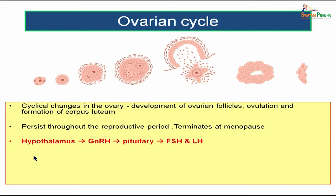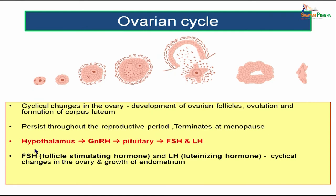The ovarian cycle is under hormonal control. The hypothalamus secretes GnRH (gonadotropin releasing hormone), which acts at the pituitary level, resulting in the release of FSH — follicle stimulating hormone — and LH — luteinizing hormone. FSH stimulates the follicles; LH results in the formation of corpus luteum.